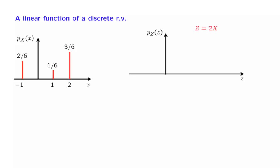First, let us note the values that z can take. When x equals minus 1, z equals minus 2. When x equals 1, z equals 2. And when x equals 2, z equals 4. The event that x equals minus 1 happens with probability 2 over 6, and when that happens, z takes a value of minus 2. With probability 1 sixth, x takes a value of 1, so z takes a value of 2. And finally, this last event happens with probability 3 over 6. We have thus found the PMF of z. Notice that it has the same shape as the PMF of x, except that it is stretched or scaled horizontally by a factor of 2.